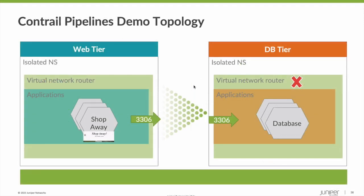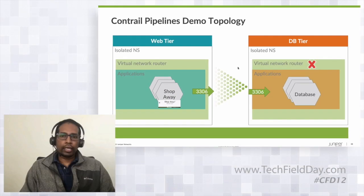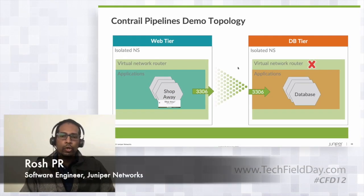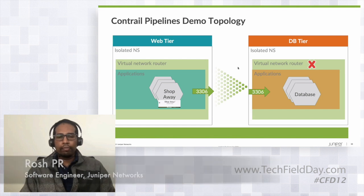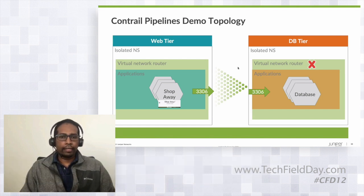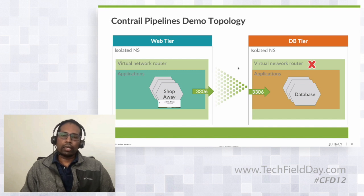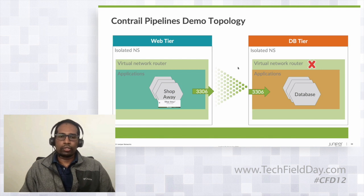I'm Rosh, and I'm a DevOps engineer at Juniper. As Sean has mentioned, the Contrail pipeline totally automates most of these configs, provisioning, and updates. This really helps in a larger system, especially when you have a large number of clusters and configs that exceed what a user or administrator can manage themselves.